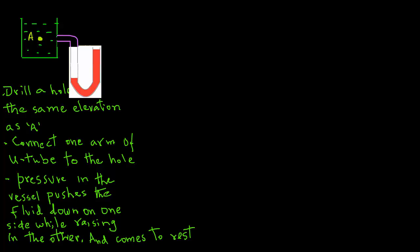We will redraw this from the previous screen. We have location A in the vessel, and then we have the U-tube. As you recall,